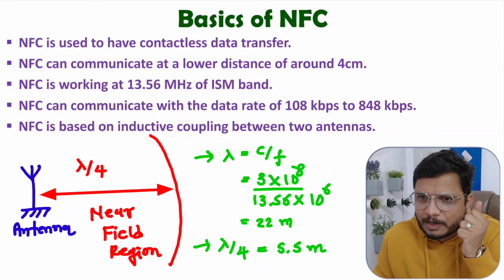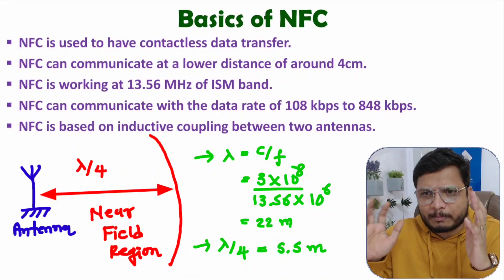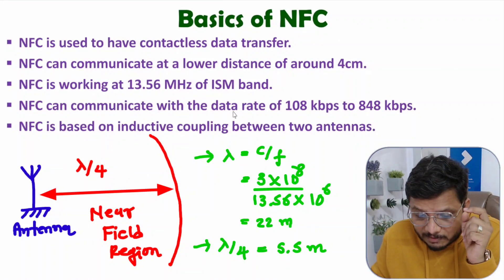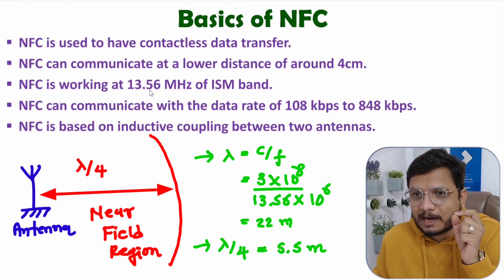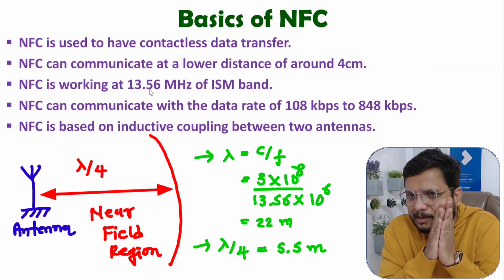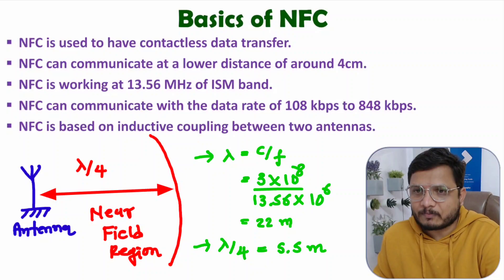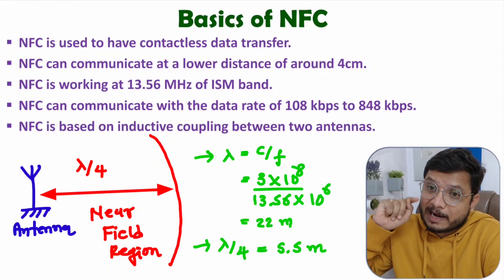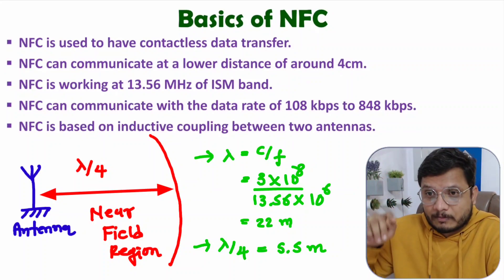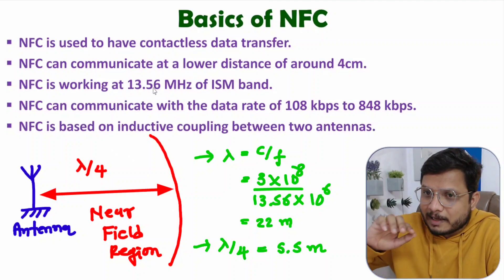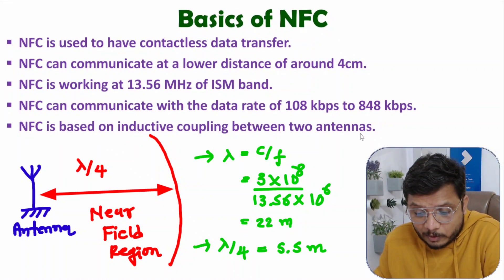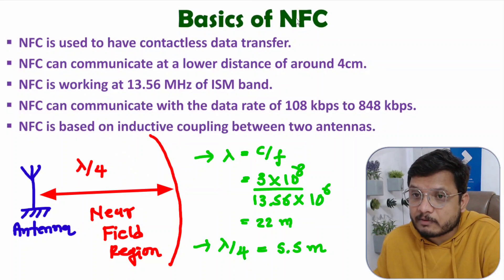Usually when you talk about mobile to Wi-Fi or mobile to Bluetooth or any other application, communication happens with the far field of antennas. But here the frequency is very low — 13.56 MHz — in which near field communication happens at a distance of only a few centimeters. Wi-Fi, Bluetooth, and ZigBee protocols all work at 2.4 GHz, so at that frequency you have far field communication. Here with the use of inductive coupling, near field communication happens — that is why the name is NFC, near field communication.